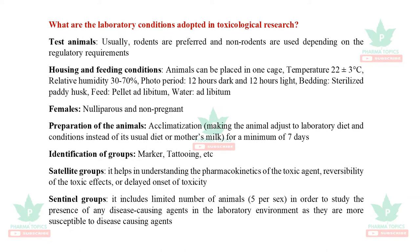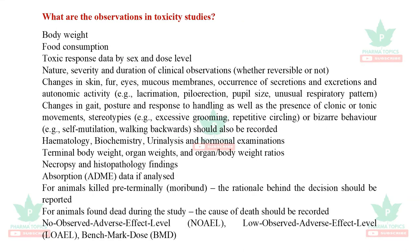Animals have to be acclimatized for a minimum of one week before starting the study. Identification of groups uses markers or tattooing. In toxicological research, satellite groups are used — they help in understanding the pharmacokinetics of the toxic agent, reversibility of toxic effects, or delayed onset of toxicity. Sentinel groups include a limited number of animals, five per sex, to study the presence of any disease-causing agents in the laboratory environment, as they are more susceptible to disease-causing agents.